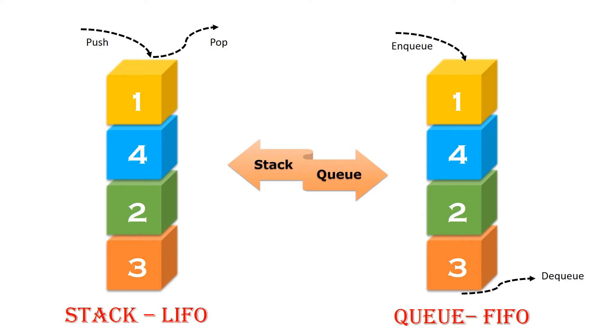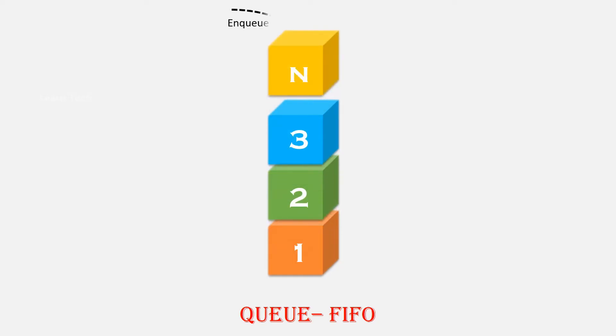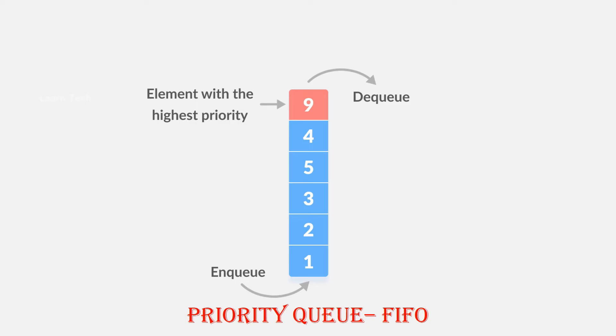Where we can use a queue is for task scheduling. You want to make a new task. There is also a priority queue. For example, if we have tasks for our team, we assign priority levels. If you have 10 tasks and the first is complete, we assign priority so the highest-priority task is processed first.